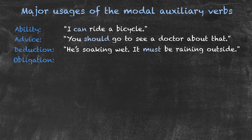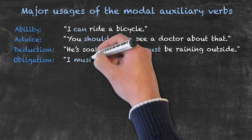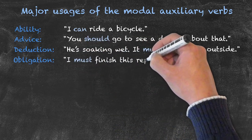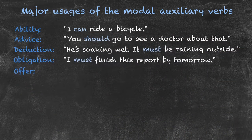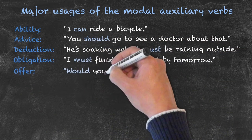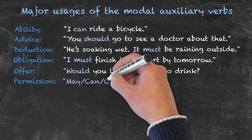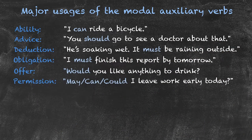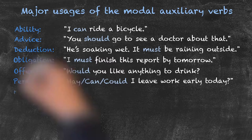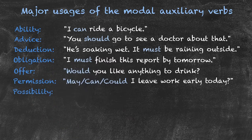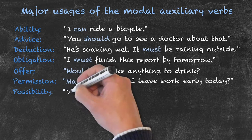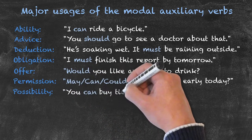Obligation — I'm obliged to do something: 'I must finish this report by tomorrow morning.' You might want to make an offer: 'Would you like anything to drink?' Permission: 'May I leave work early today?' 'Can I leave work early today?' 'Could I leave work early today?' And possibility: 'You can take a train from London to Manchester. You can buy tickets at the door or in advance.'